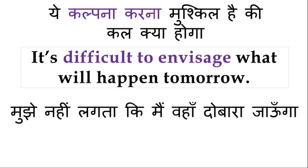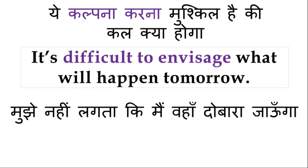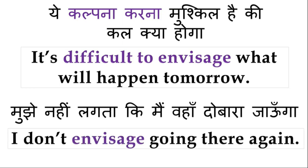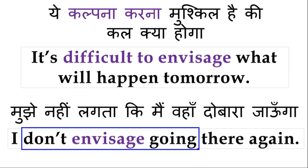'It's difficult to envisage what will happen tomorrow.' Envisage کا meaning ہوتا ہے کسی چیز کی کلپنا کرنا — ایسا سوچنا کہ something is likely to happen. یہ imagine کا synonym ہے. 'I don't envisage going there again' — مجھے نہیں لگتا کہ میں وہاں دوبارہ جاؤں گا. 'I didn't envisage that this would happen.' 'I don't envisage working there again.'